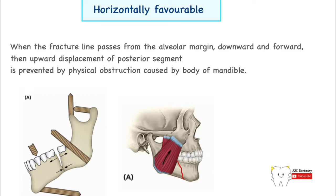Regarding muscle attachments: on the medial side at the angle of the mandible, we have the attachment of the medial pterygoid, and on the condylar process we have the attachment of the lateral pterygoid. On the external or lateral surface, the angle area of the mandible is completely covered by the masseter, and the coronoid is covered by the temporalis muscle.